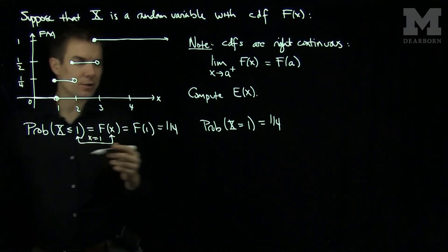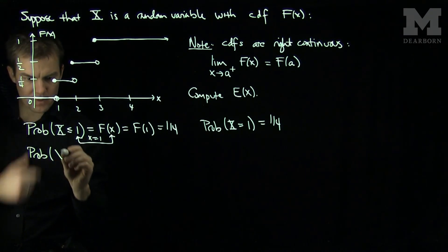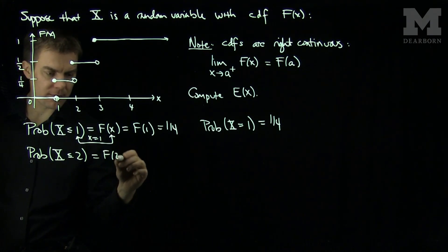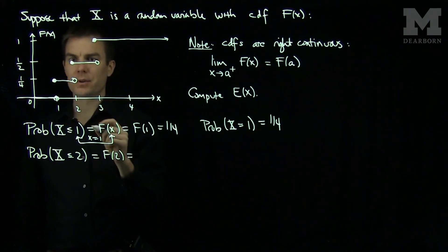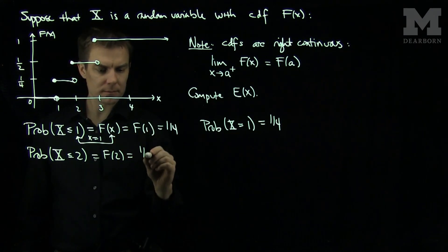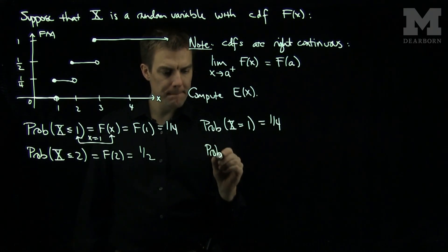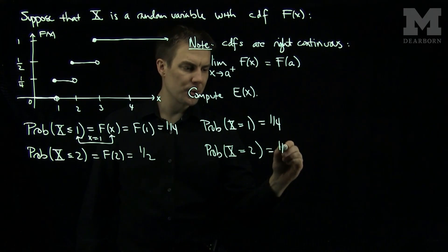Then we have this jump at 2, so we can compute the same thing. The probability that X is less than or equal to 2 is F(2), and F(2) we see from this graph is going to be 1/4, which means the probability that X equals 2 is also equal to 1/4.